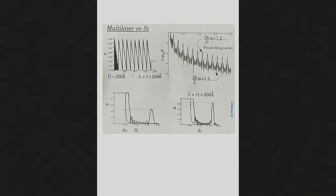If things get more complicated and there's some kind of depth profile that oscillates as a function of depth — drawn here as triangular profiles — you'll get a series of diffraction peaks that occur at, again, 2π over the repeat distance in real space. So in Q, the positions of these peaks are 2π over the unit cell distance — the repeat distance in real space. This reciprocal relationship holds throughout.